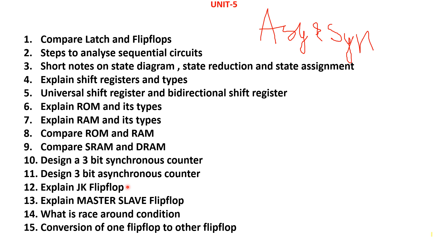With that continuation: master-slave flip-flop is important and is a repeated question — many times they have asked it. What is the race-around condition, and how to eliminate the race-around condition from JK flip-flop — this is also a most-repeated question. The fourteenth and fifteenth topics are conversion of one flip-flop to another — for example SR flip-flop to D flip-flop, or JK flip-flop to SR flip-flop.